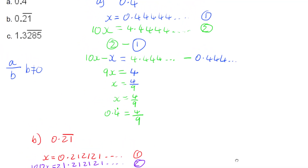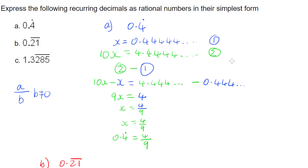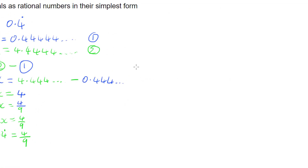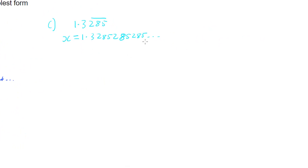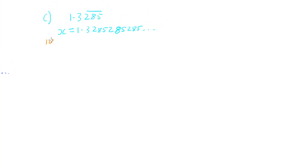Part c is 1.3285 where only the 285 recurs, so the number is 1.3285285285... Let x equal this. We want to find a power of 10 that gives matching recurring decimals. Trying 10x gives 13.285285... but the digits don't line up. Trying 100x gives 132.85285... — that also doesn't work. We need to try a higher power of 10.